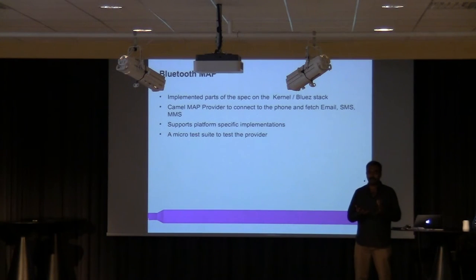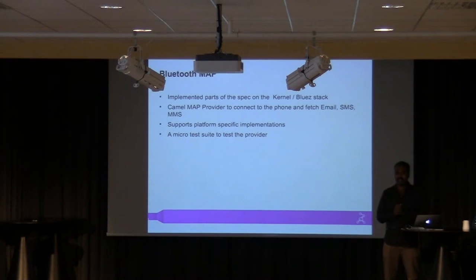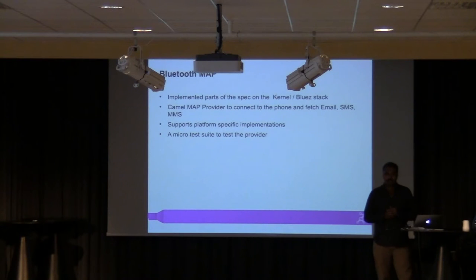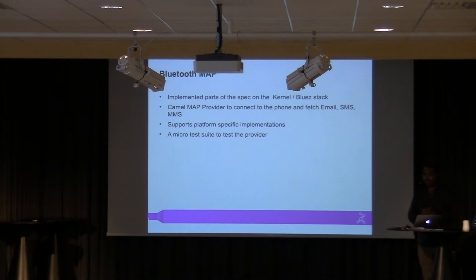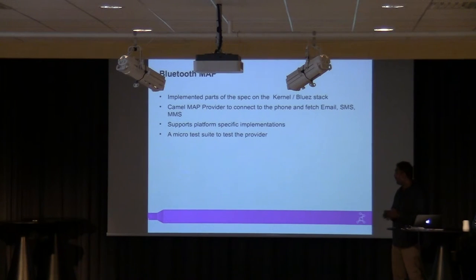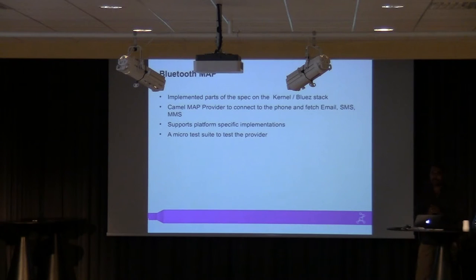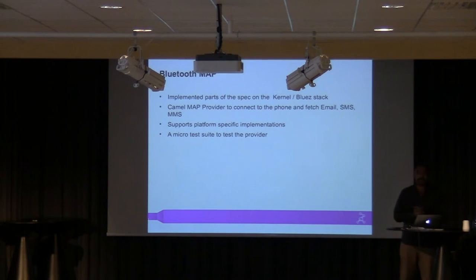Bluetooth has many profiles. Most of us know the A2DP profile, which we use for Bluetooth music and next/forward control. Similar to that, there's a profile called the MAP profile. This profile defines a specification about how each account on the phone is exposed over Bluetooth, so that an external application can connect and fetch messages to show the user. The MAP specification has been around for some time, and I included some parts of it on the current BlueZ stack, with some parts done by other people in the community. More or less the implementation of the MAP protocol on BlueZ is complete, give or take a few parts — it'll take some years to stabilize.